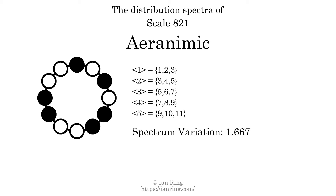The spectrum variation is the sum of all the widths divided by the number of tones. The spectrum variation of this scale is 1.667. Since the variation is greater than 0, this indicates that the scale is not perfectly even. The highest spectrum width is 2, and since this is greater than 1, we know that this scale is not maximally even.